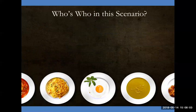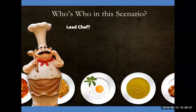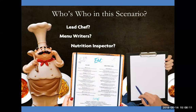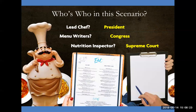Step 6: So who's who in this scenario? We had a lead chef, some menu writers, and the nutrition inspectors. What if I told you the President is the lead chef, Congress are the menu writers, and the Supreme Court is the nutrition inspector.